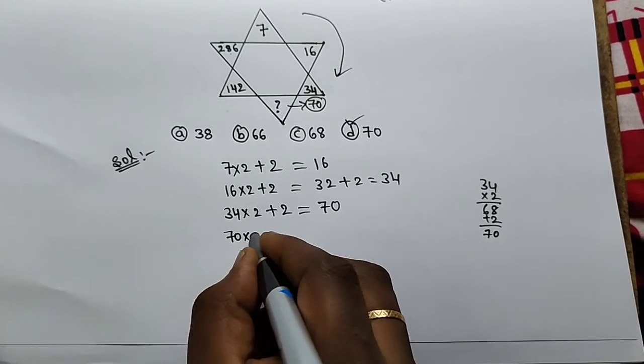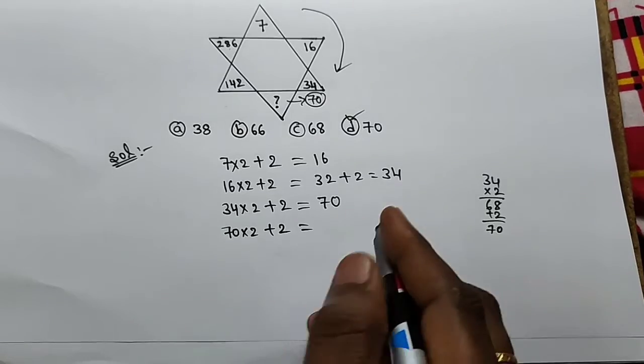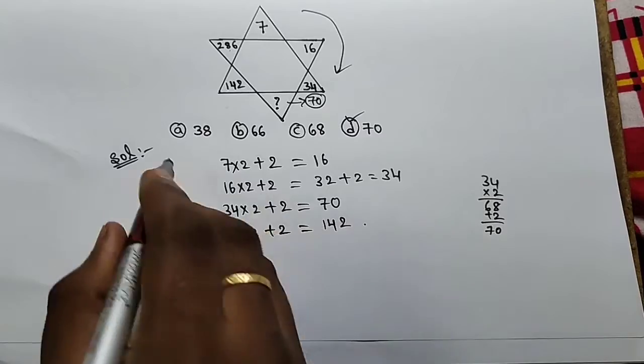70 into 2 plus 2. 70 times 2 is 140. 140 plus 2 equals 142.